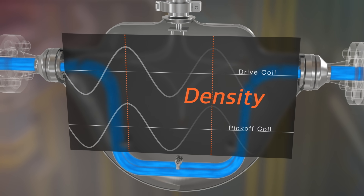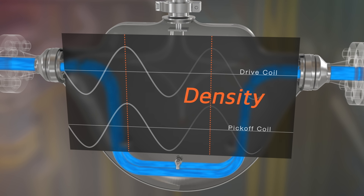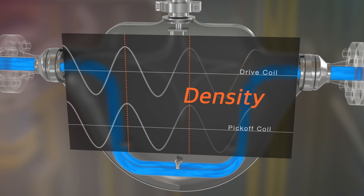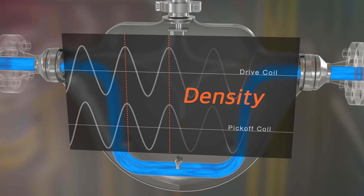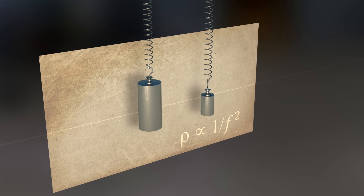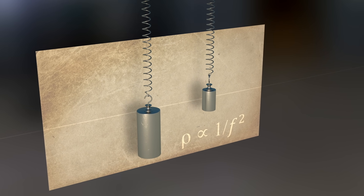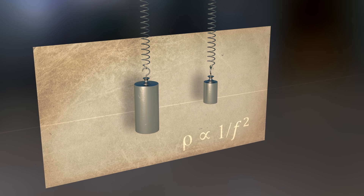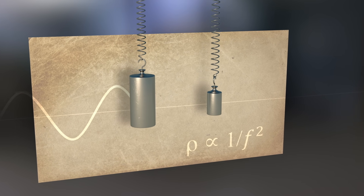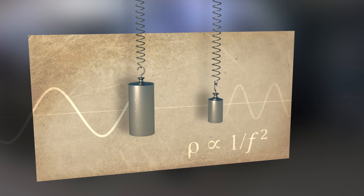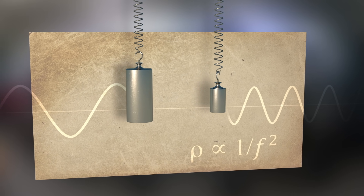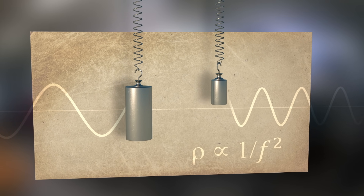When the liquid density changes, the vibrating frequency of the tubes also changes. Similar to a spring and mass system oscillating at its natural frequency, a larger mass oscillates at a lower frequency while a smaller mass oscillates at a higher frequency.